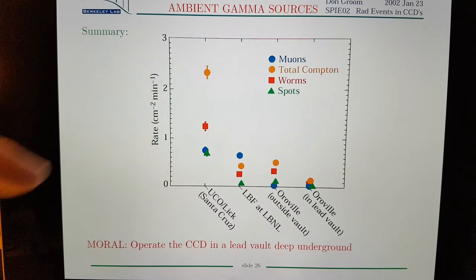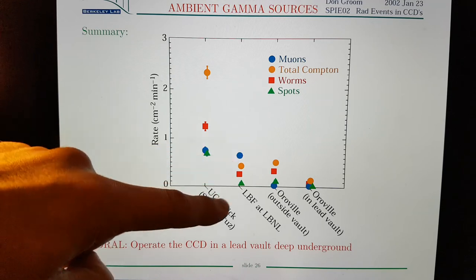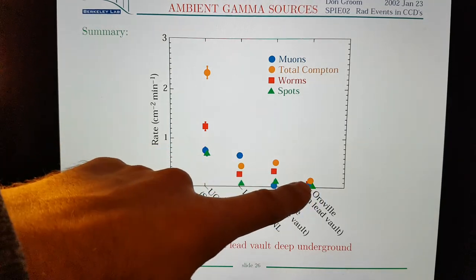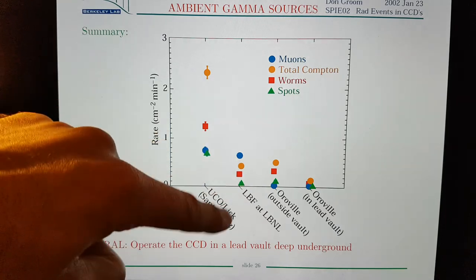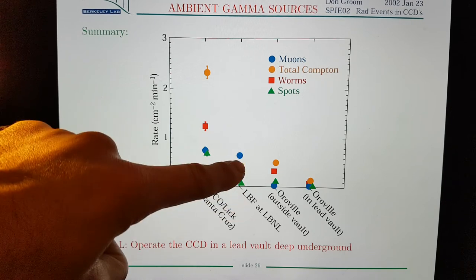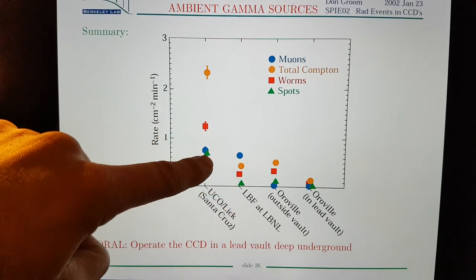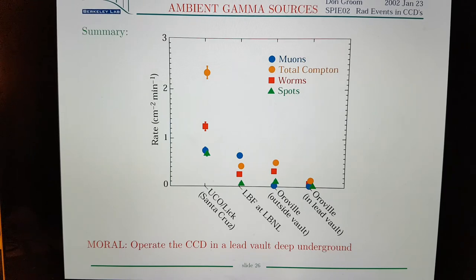They conducted tests on other sites, some were underground and or near reactors. And you see the ones that were underground and near reactors, they basically didn't see any muons, well there were some here. But in Santa Cruz they saw plenty of muons, close to the expected value.